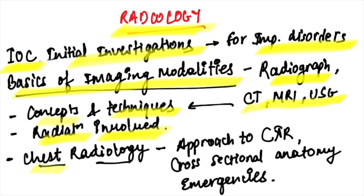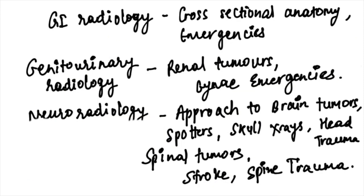For chest radiography, revise the approach to reading a chest X-ray — what to look for, cross-sectional anatomy, and emergency conditions that present on a chest X-ray. For GI radiology, cross-sectional anatomy should be clear and emergency presentations should be well understood.